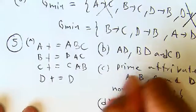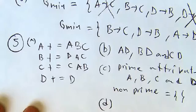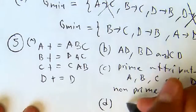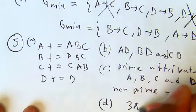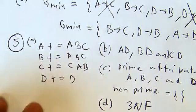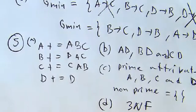So the answer for question D is that the current normal form is 3NF. On the next tutorial we will continue solving questions 6, 7, and 8. Thank you.